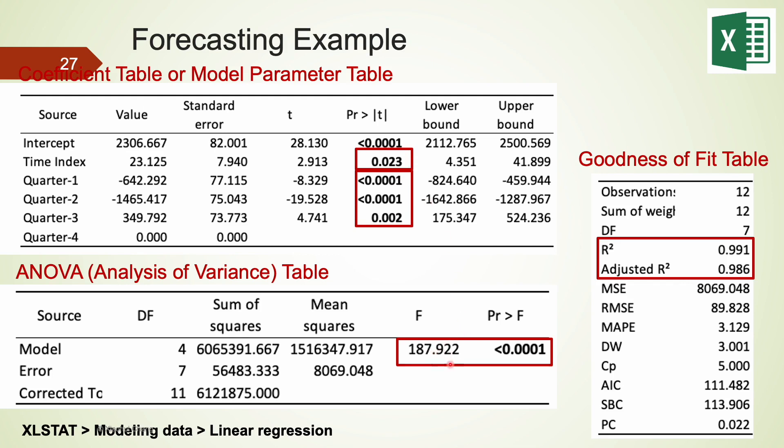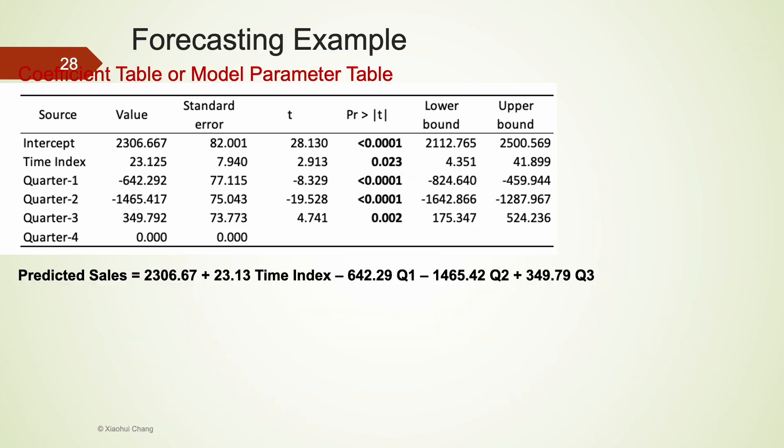Using the estimated slope coefficients, we can write down the predicted sales results using time index and a quarter. Q4 is used as the reference data. Compared to Q4 sales, Q3 sales are about 350 copies more, Q2 sales are about 1465 copies less, and Q1 sales are about 642 copies less. If we ranked quarterly sales, the Q3 results, Q3 has the higher sales followed by Q4 and Q2. These results are not surprising because the largest enrollment in universities are usually during the Fall term, which is in Q3. And textbook sales may go up a lot during that time.